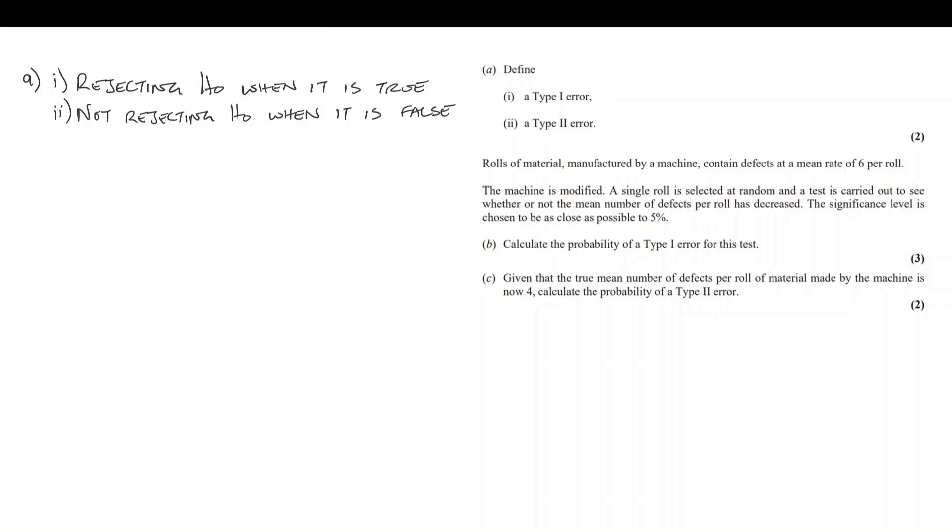Continuing with the question, we're told that rolls of material manufactured by a machine contain defects at a mean rate of 6 per roll. The machine is modified. A single roll is selected at random and a test is carried out to see whether or not the mean number of defects per roll has decreased.